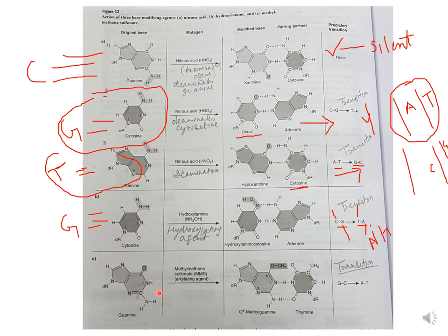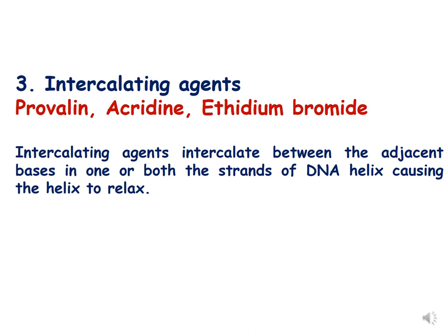The last example of base modifying agents is alkylating agents. Guanine, when treated with methyl methane sulfonate (MMS), an alkylating agent, converts into O6-methylguanine. Originally guanine bonded with cytosine, but O6-methylguanine bonds with thymine. Because of this, in the next round of replication G-C is replaced with A-T — an example of transition mutation. This is summarized in a table from Russell's textbook.